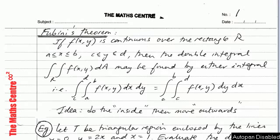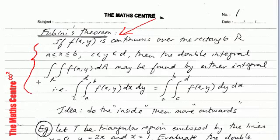In this video we are going to look at an example on how to evaluate a double integral. First let's state Fubini's theorem. This is how Fubini's theorem is given in many calculus textbooks. If F is continuous over the rectangle R, with x between A and B and y between C and D, then the double integral of F over the region R may be found by either integral.